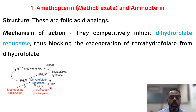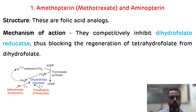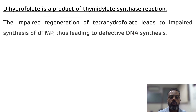In pyrimidine nucleotide synthesis, deoxyuridine monophosphate is converted to deoxythymidine monophosphate via thymidylate synthase. During this reaction, tetrahydrofolate is converted into dihydrofolate. This dihydrofolate is normally converted back to tetrahydrofolate via dihydrofolate reductase, but this enzyme is inhibited by methotrexate in eukaryotic cells. So there is no regeneration of tetrahydrofolate, no conversion of deoxyuridine monophosphate to deoxythymidine monophosphate, resulting in impaired synthesis of deoxythymidine monophosphate and defective DNA synthesis.